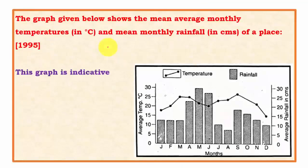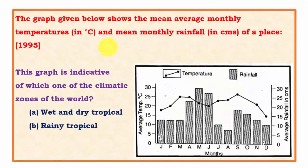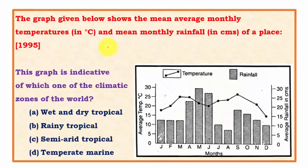The first question shows a graph with mean average monthly temperatures and mean average rainfall, asking us to identify the region from four options: wet and dry type, dry tropical, semi-arid tropical, and temperate marine. If our basics are clear, these types of questions are easy, and they are asked almost every year.